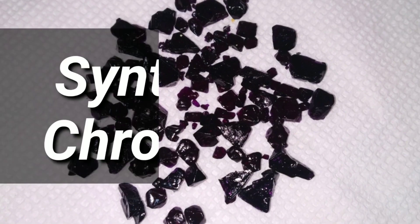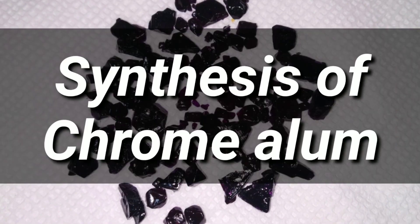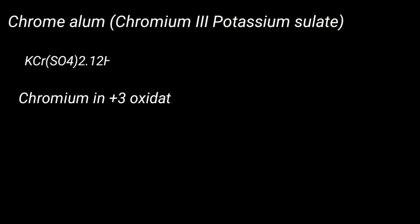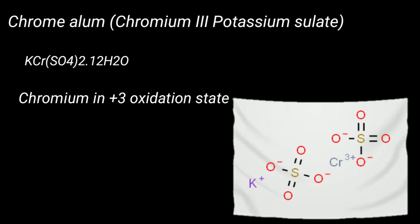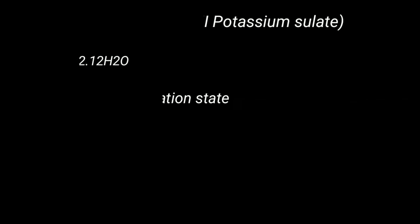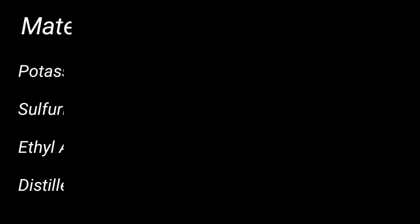Hello friends. In this video we will be synthesizing chrome alum, that is chromium potassium sulfate. It is a double salt of chromium sulfate and potassium sulfate with 12 molecules of water of crystallization, and chromium in plus 3 oxidation state.